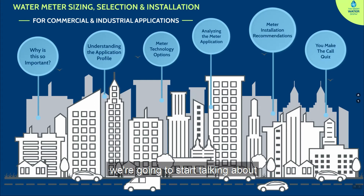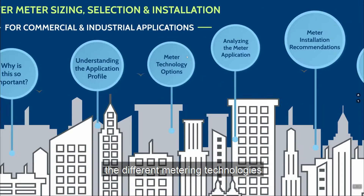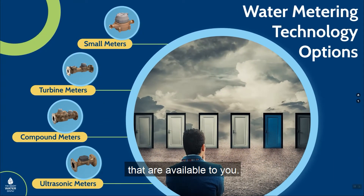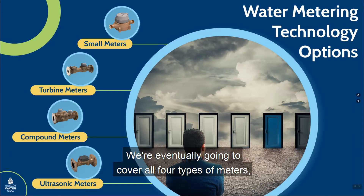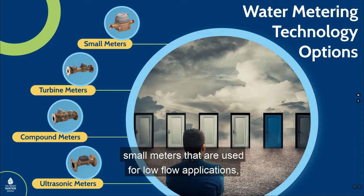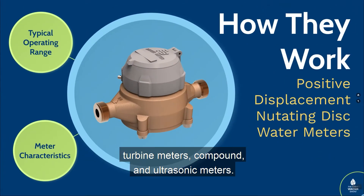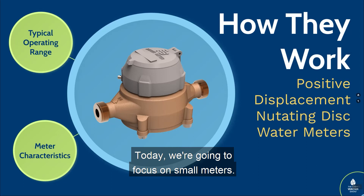In today's lesson, we're going to start talking about the different metering technologies available. We'll eventually cover all four types of meters: small meters used for low flow applications, turbine meters, compound, and ultrasonic meters. Today, we're going to focus on small meters.